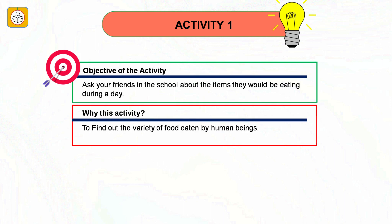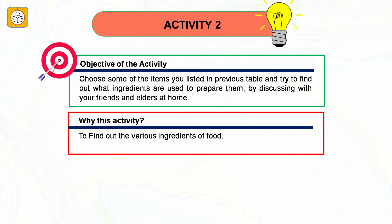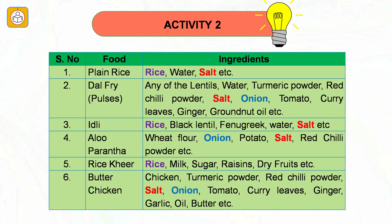Activity number one: Ask your friends in school about the items they would be eating during a day. This activity is to find out the variety of food eaten by human beings. We find that human beings eat a variety of food for breakfast, lunch, as evening snacks and for dinner, and that the food varies with the native state of the student. Activity number two: Choose some of the food items and find out what ingredients are used to prepare them. This is to find out the various ingredients of food, including common ingredients shared across dishes.